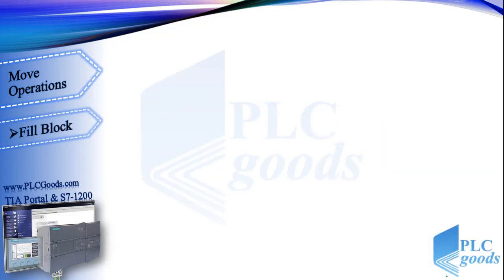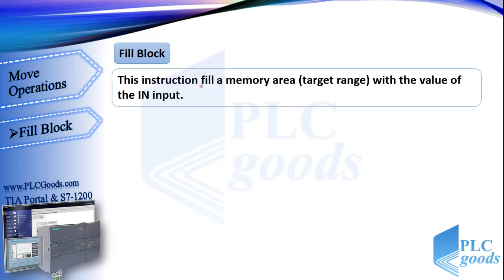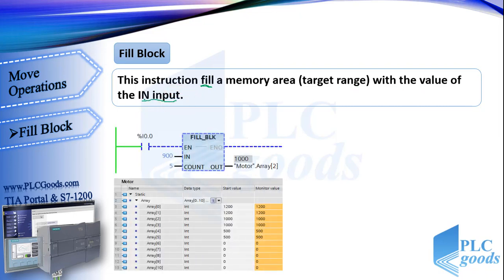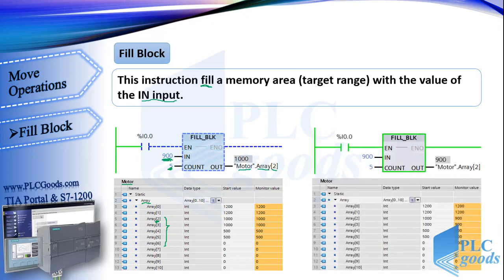The next instruction is similar to move block. It fills a memory area with the value of the IN input. As you see, its output refers to the motor data block and array with number 2, and its count value is 5. So if I activate this contact, the fill instruction writes number 900 on all 5 selected addresses.